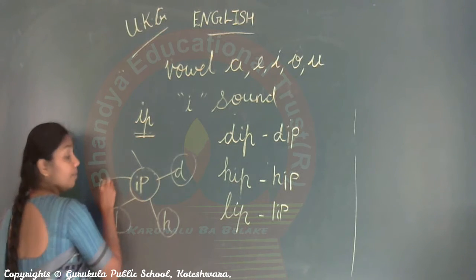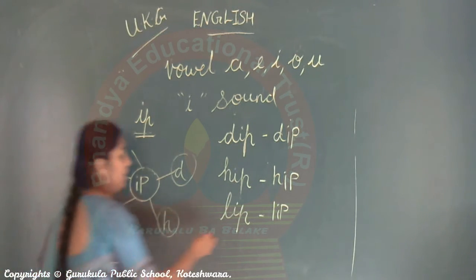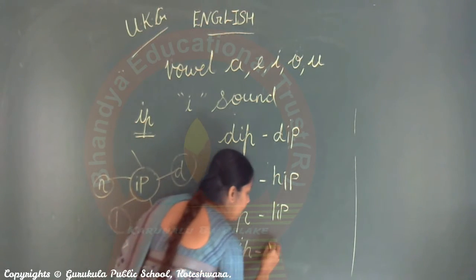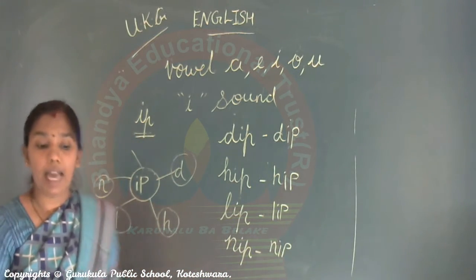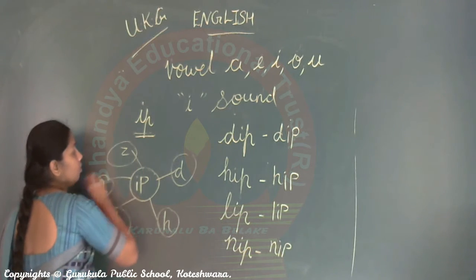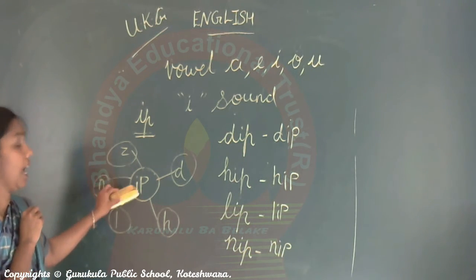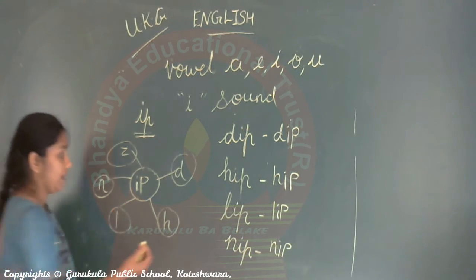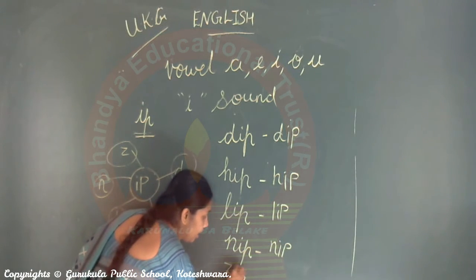Next one - if I use the letter N, then it becomes N-I-P - Nip. One more - if I add Z, what is this? Z-I-P - how do you pronounce it? Z-I-P - Zip.